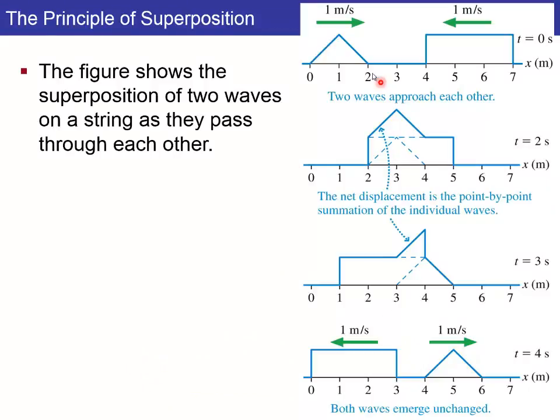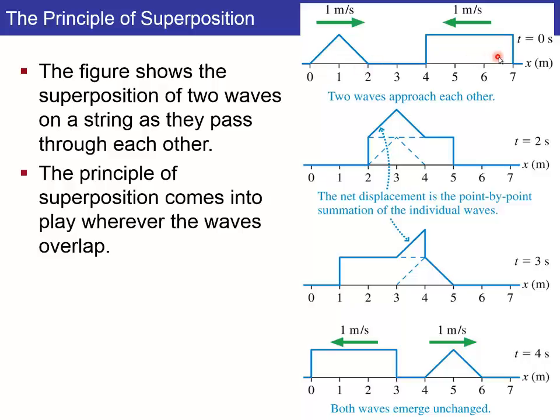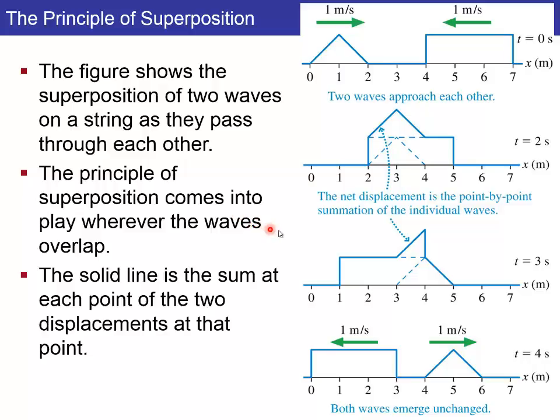So another example, here we see a triangle wave going from left to right, and a rectangular shaped pulse going from right to left, both at one meter per second on a string. Here's Y going up and down, and X going left to right. At different intervals of time, you see how these overlap. The principle of superposition comes into play wherever the waves overlap, and the solid line is the actual wave, the sum of the two individual waves, original pulses, at that point.